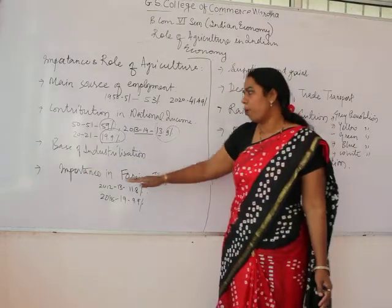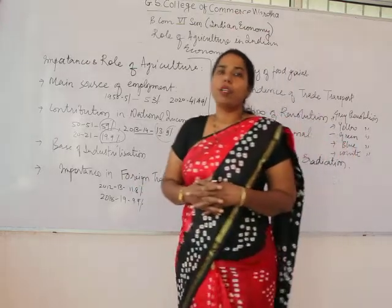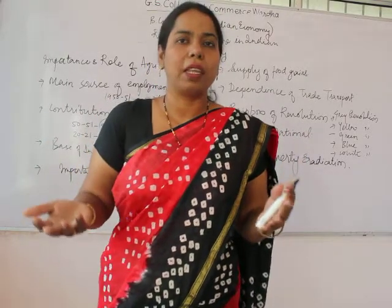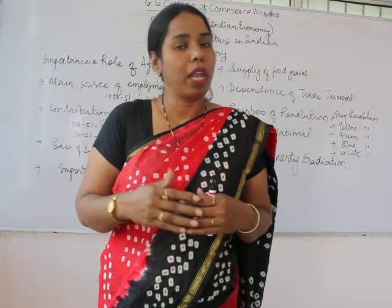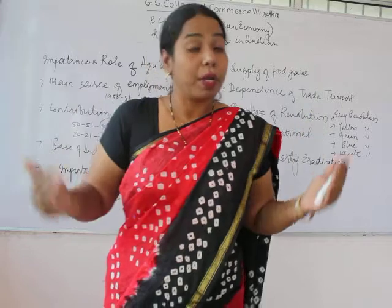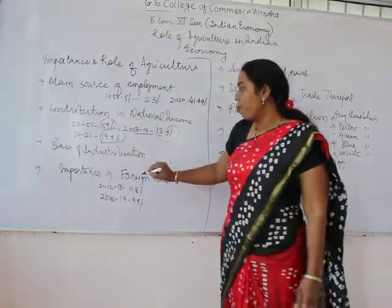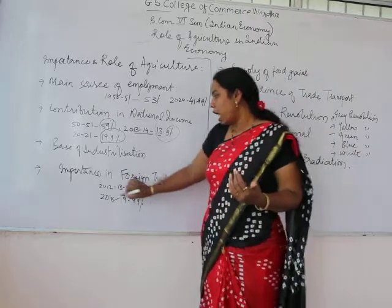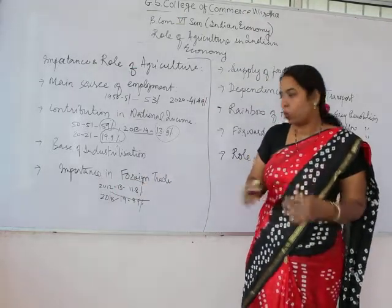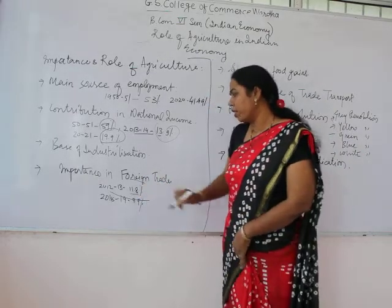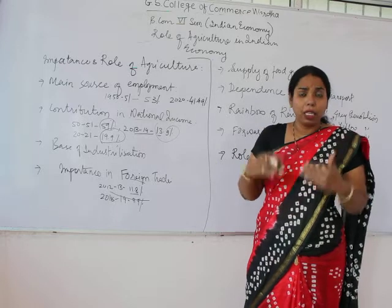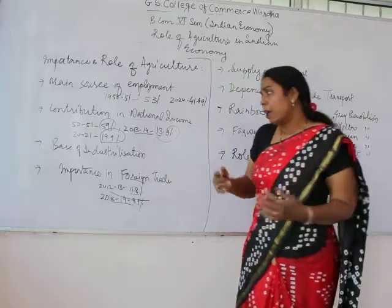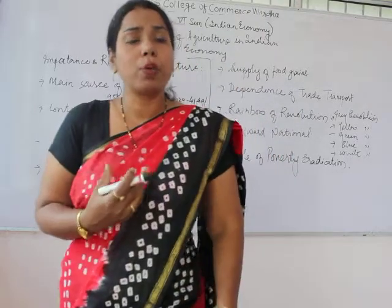The fourth aspect is the importance of agriculture in foreign trade. Foreign trade involves exports — selling goods to other countries — and imports — buying goods from other countries. From the export perspective, India's agricultural contribution to exports was 11.8% in 2012-13. However, this contribution declined to 9.90% in 2018-19.